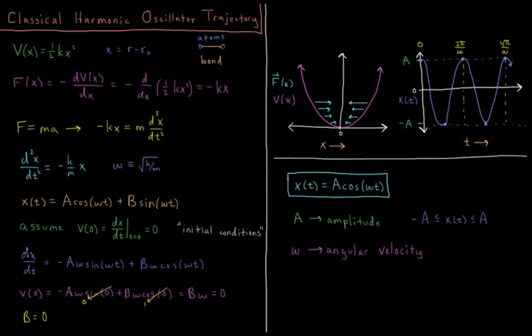We're going to have dx/dt equals, we take the derivative of this with respect to time. A cos(ωt) gives us minus Aω sin(ωt). B sin(ωt) is going to give us Bω cos(ωt). We have to set this equal to 0. Substitute in for t equals 0. The sine of 0 is 0, so this term goes away. The cosine of 0 is 1, so B times ω has to equal 0.